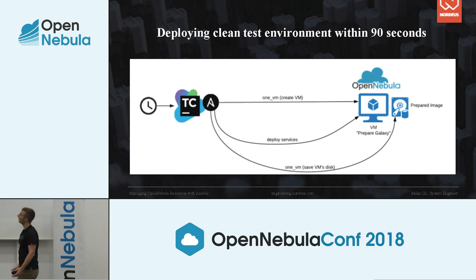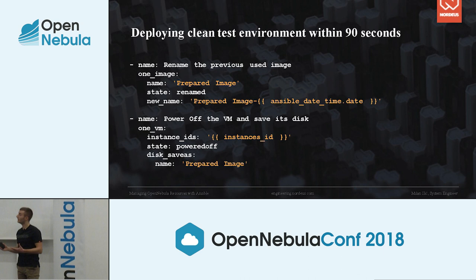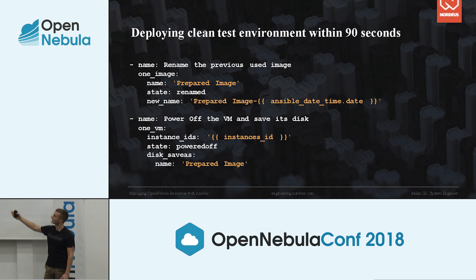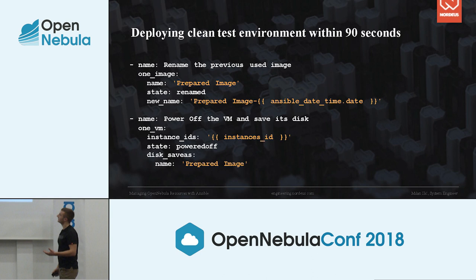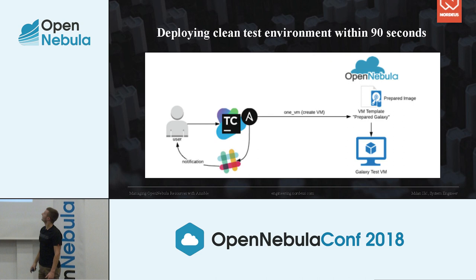Because OpenNebula doesn't allow us to have more than one image with the same name, firstly we need to rename the previously used image and give it a new name with a timestamp. Then we power off the virtual machine and save its disk as a prepared image. And when a developer needs a test environment, everything that needs to be done is to create a virtual machine from a template which uses that predefined, prepared image — and everything is ready for testing in 90 seconds.